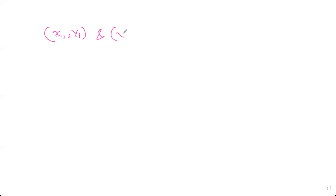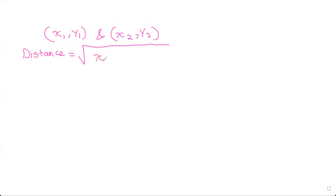Now when you have two points — (x1, y1) and (x2, y2) — and we have to find the distance between them, the formula is the square root of (x2 minus x1) whole squared plus (y2 minus y1) whole squared. This is the distance formula.